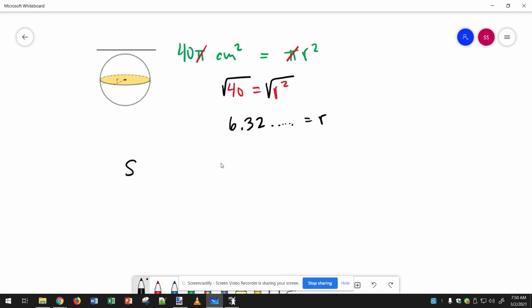So surface area of a sphere is 4πr², which is what we found in class. So I'm going to take this number that we just did, all of the digits, and square them.